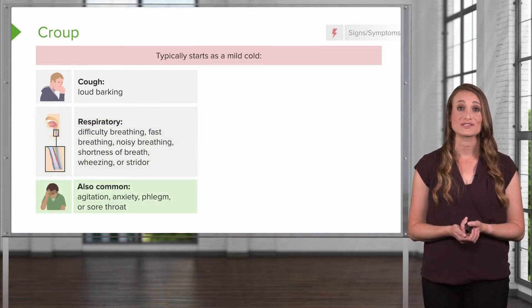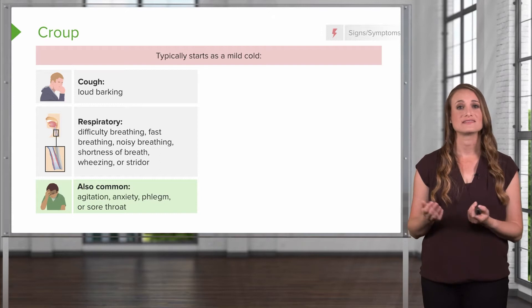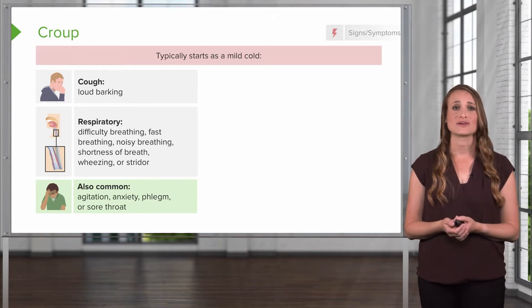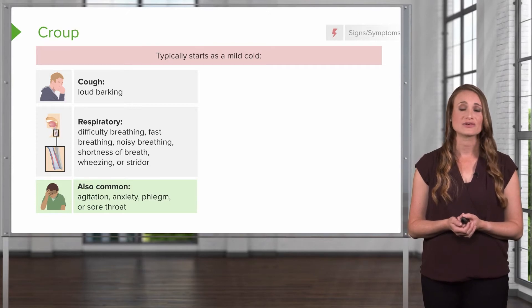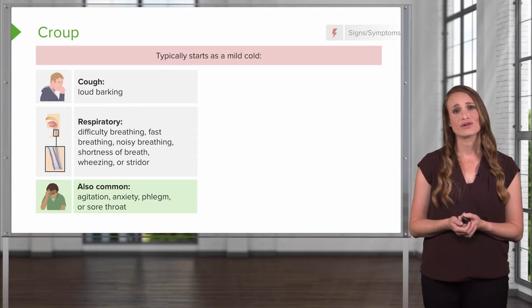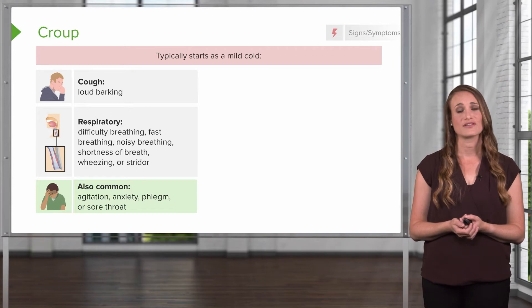As the respiratory status worsens and the work of breathing increases, the child may become anxious or agitated as they become air hungry. They may also have a lot of secretions to clear and a sore throat from all the coughing and irritation in their airway.